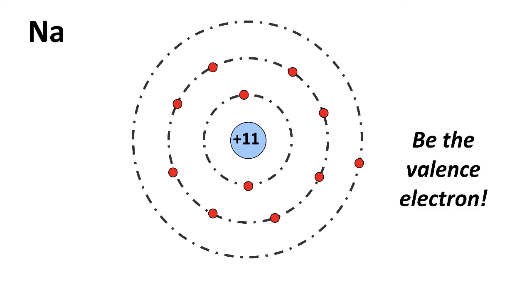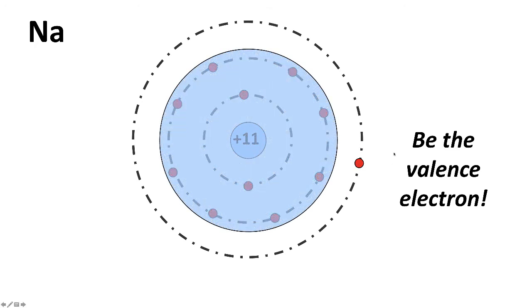If you can imagine you were the valence electron, so be the valence electron and think about what sorts of forces you're going to feel. You're going to be attracted quite strongly by the nucleus, but you're going to be repelled by the other electrons. Very roughly what we can do is say, for this outer electron, this valence electron, there's a positive 11 charge due to the nucleus.